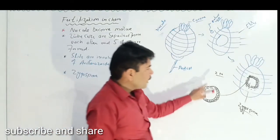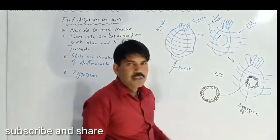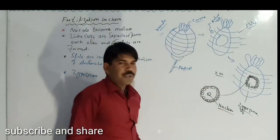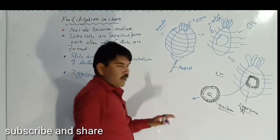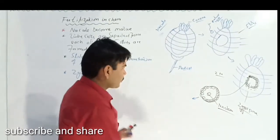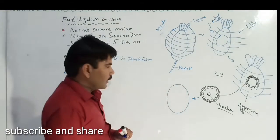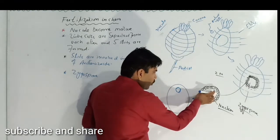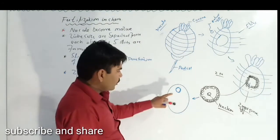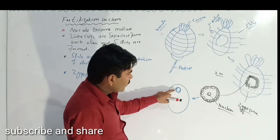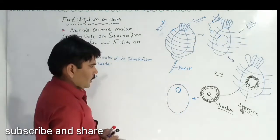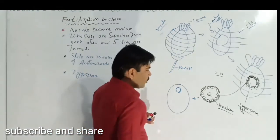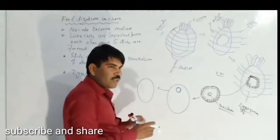After the release, the process of germination will start. This is basically the nucleus of the zygospore. The central nucleus moves to the apical region — from the center it comes to the apical or top portion. This cell divides by meiosis and produces two cells which are unequal in size.